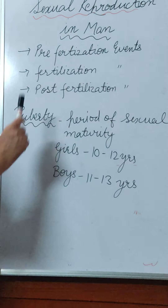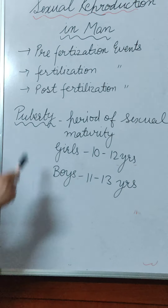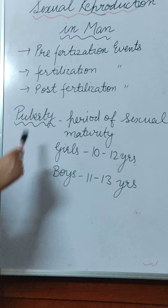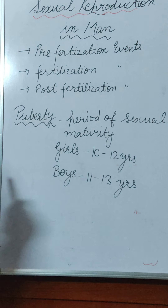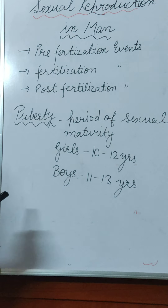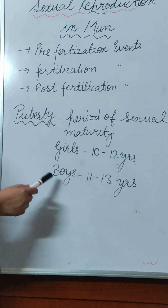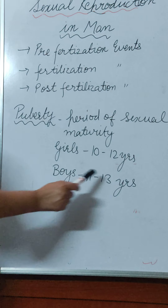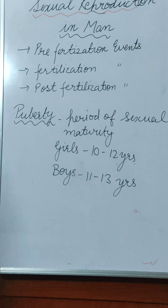They start producing the male gamete, the sperm. In the same way, females also have a puberty phase — growth of their sexual organs, body pattern changes, and they start producing the female gamete, the ovum. For girls, the age of puberty is 10 to 12 years, and for boys the puberty age is 11 to 13 years.